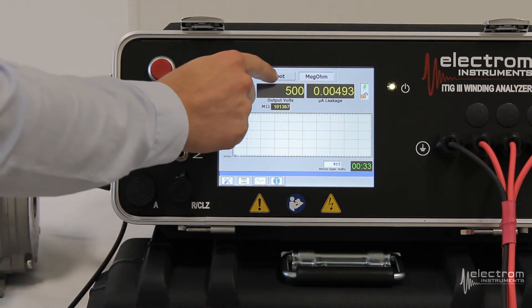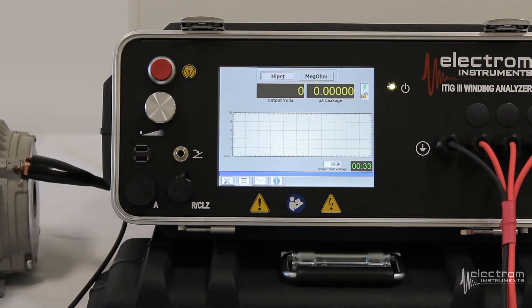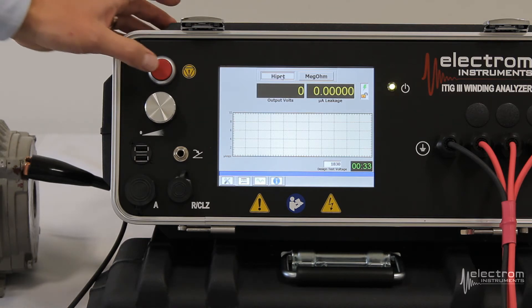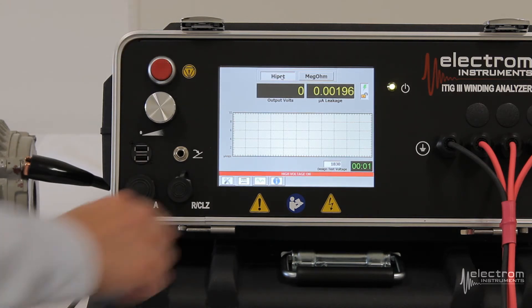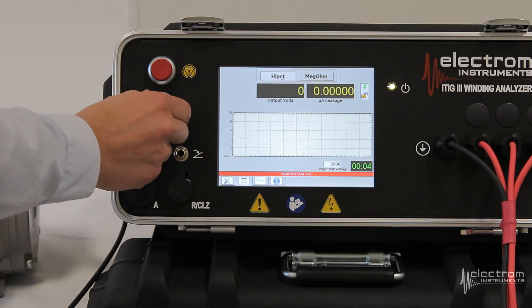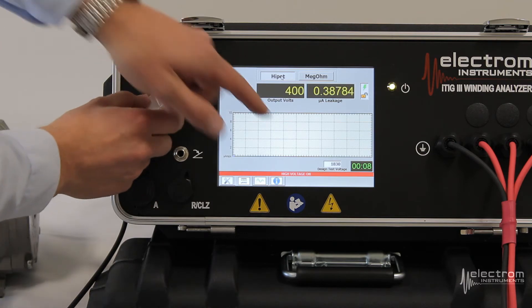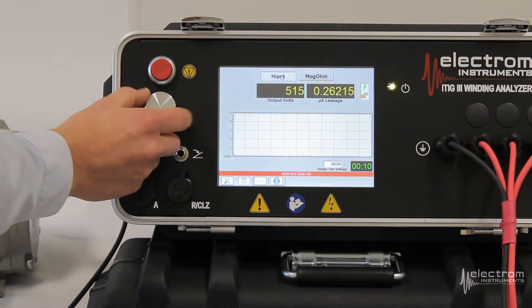Next step here is the high pot test. Very similar to the insulation resistance or megohm. We'll press the red button. High voltage is on. And we now use the silver dial to increase the voltage. It will say down here what our design test voltage is.